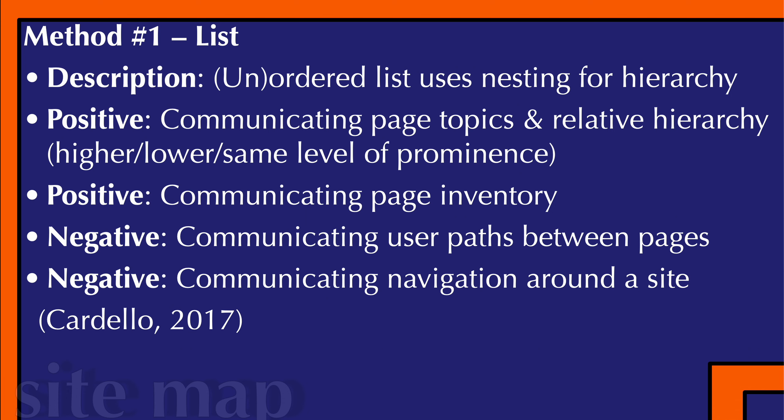The positives of this is that you can communicate page topics via the keywords that are at the top of each section of the list. This follows relative hierarchy through the indenting, and you can communicate whether something is of a higher, lower, or the same level of hierarchy. Another positive is that you can communicate page inventory really easily — you can see on this basic list what's there.